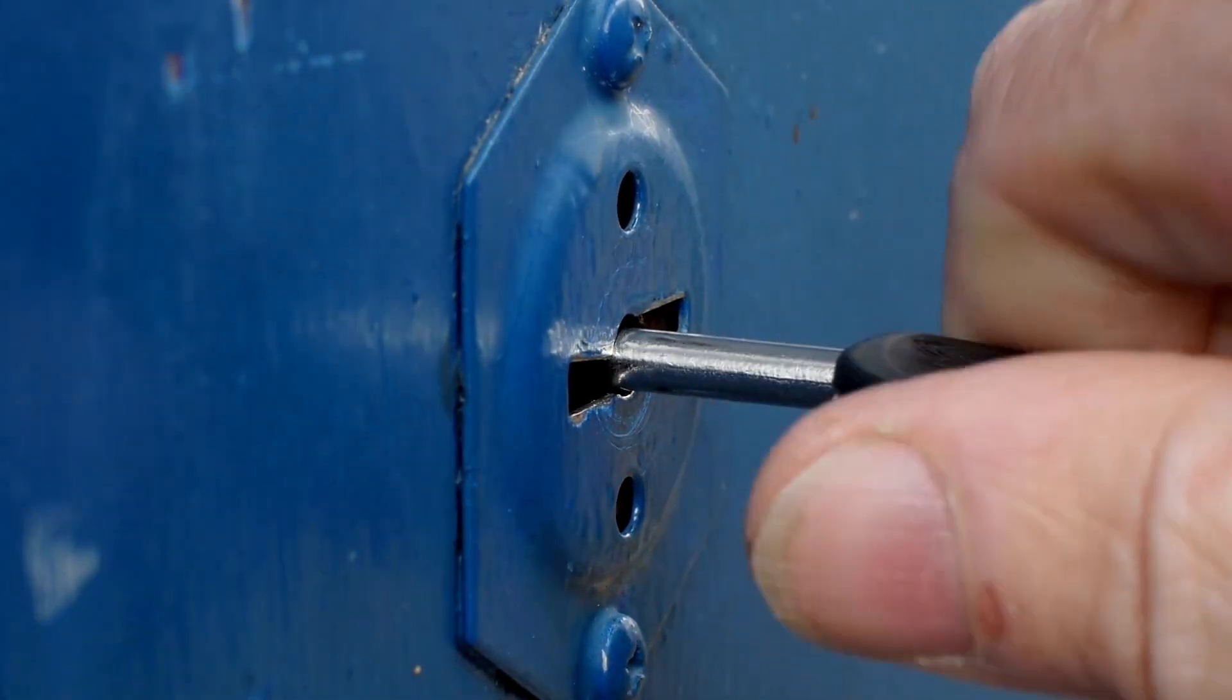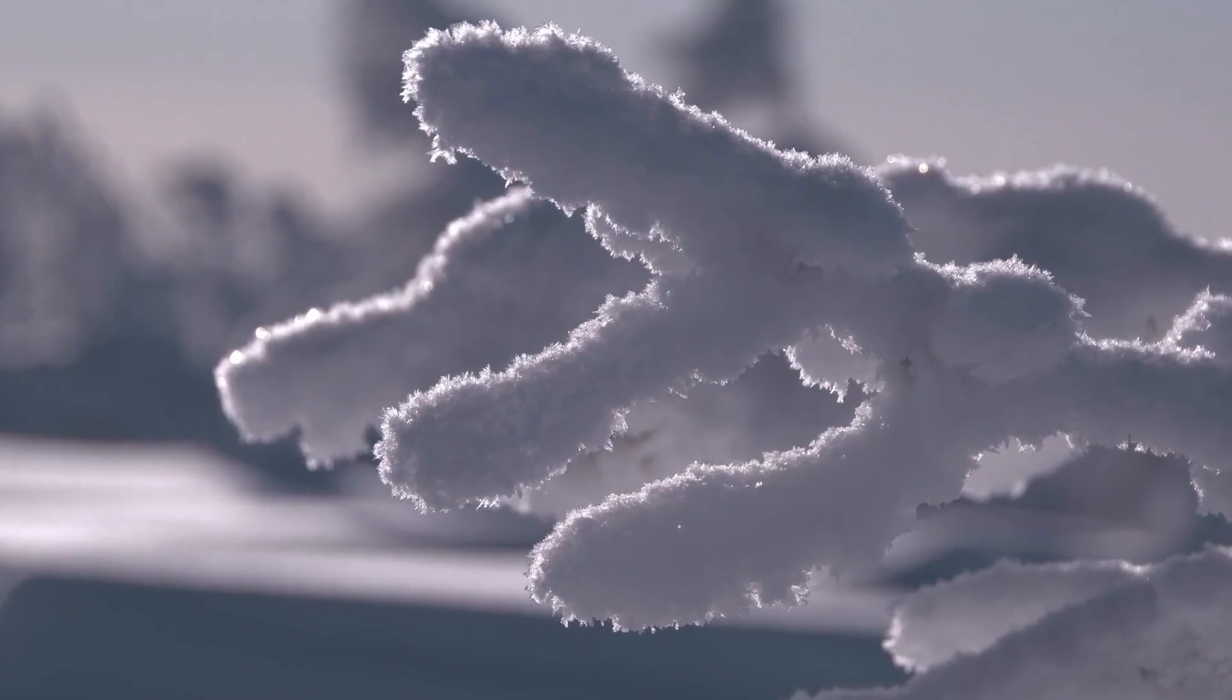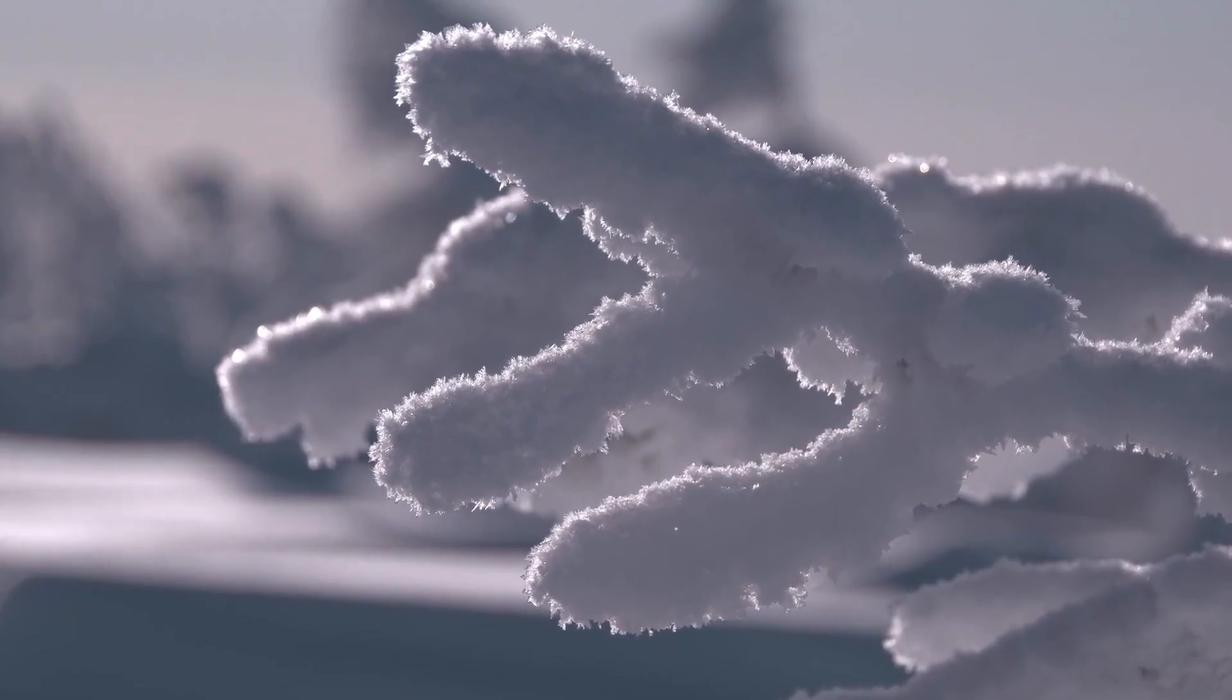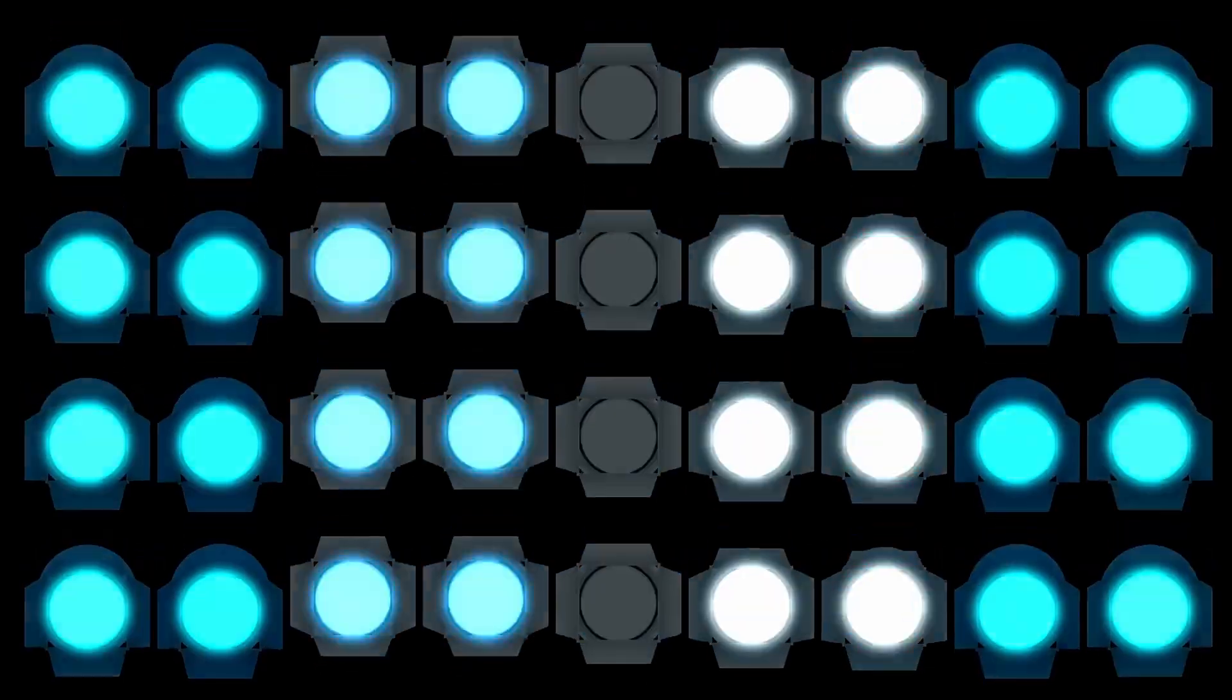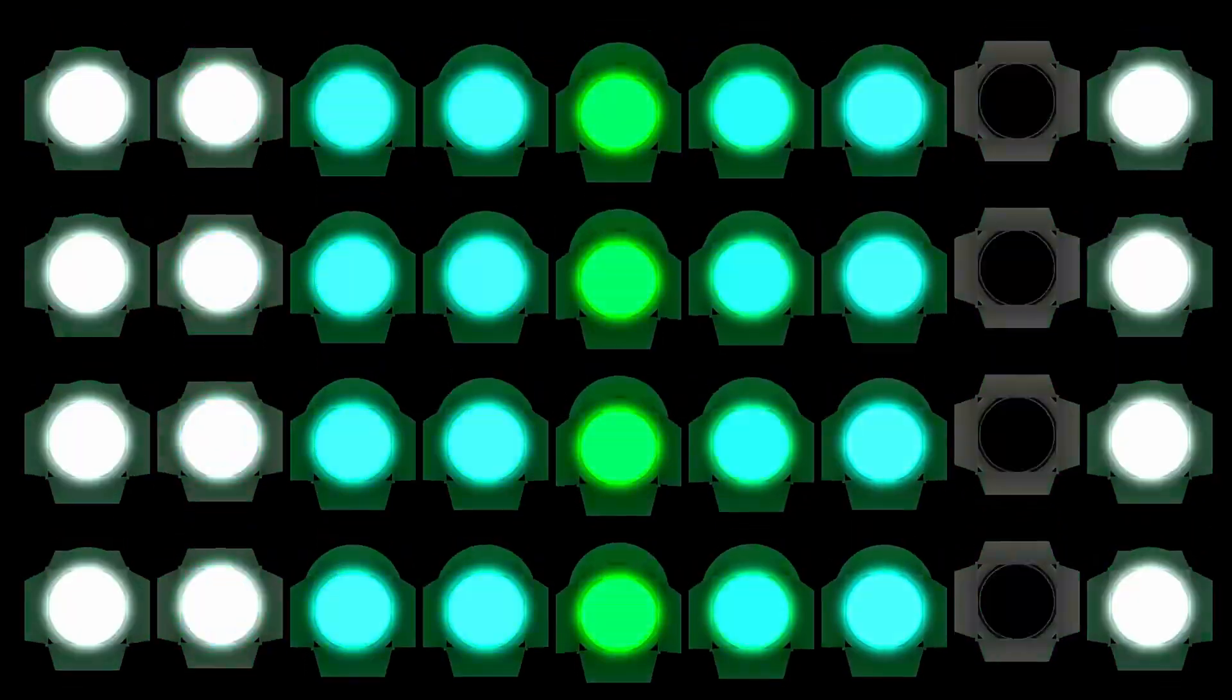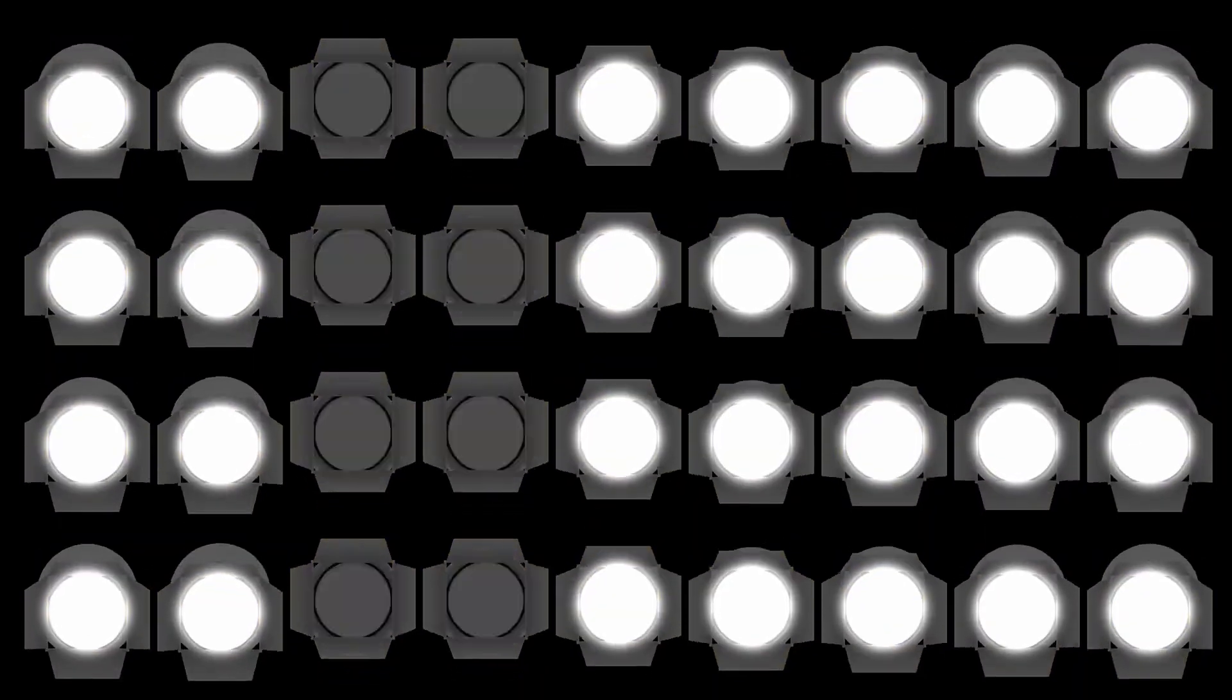NASA will likely instruct them to pivot toward observing weaker coma emissions, narrow gas lines, or attempt direct nucleus imaging without relying on a bright coma. Any indication of renewed activity or flare-ups, even transient ones, could guide which telescopes switch to monitoring mode.